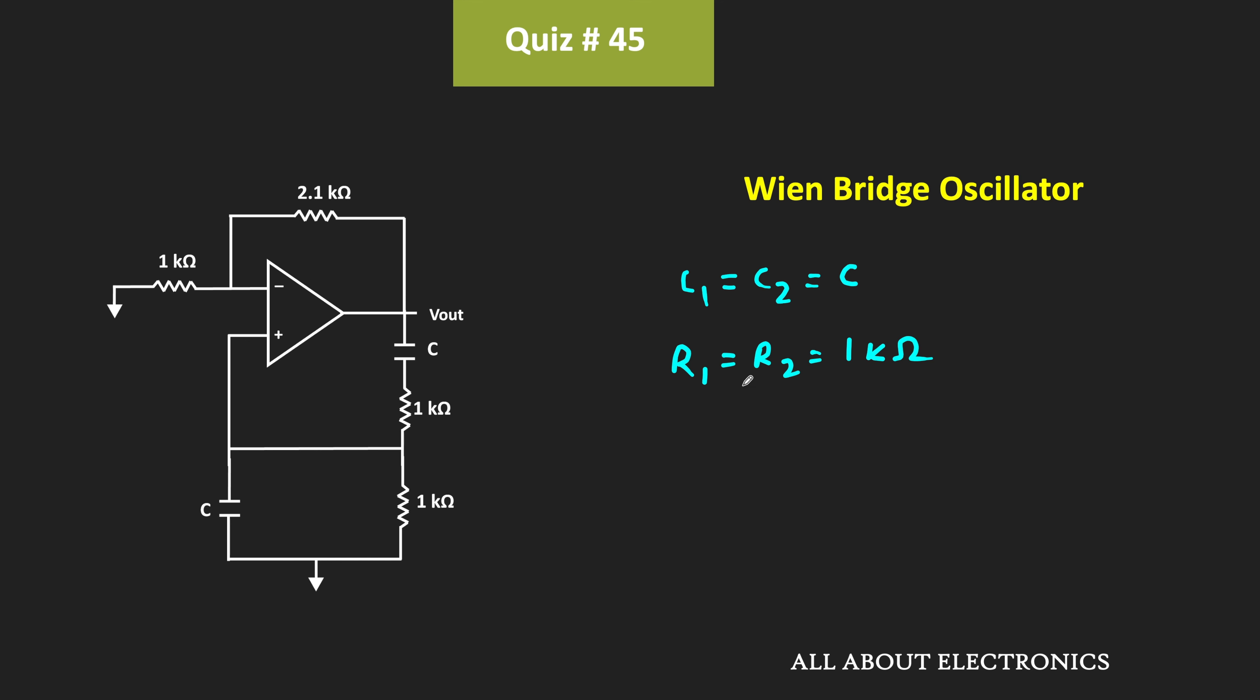Since R1 equals R2 and C1 equals C2, the oscillation frequency of this Wien Bridge Oscillator is equal to 1 divided by 2π times RC.